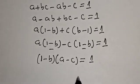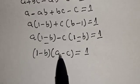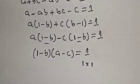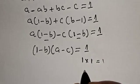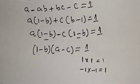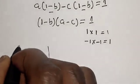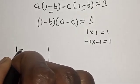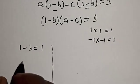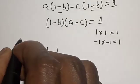Note: since we have to find integer solutions, 1 equals 1 multiplied by 1, or 1 equals negative 1 multiplied by negative 1. So we have two cases. Case 1: 1 minus B is equal to 1, and A minus C is equal to 1.